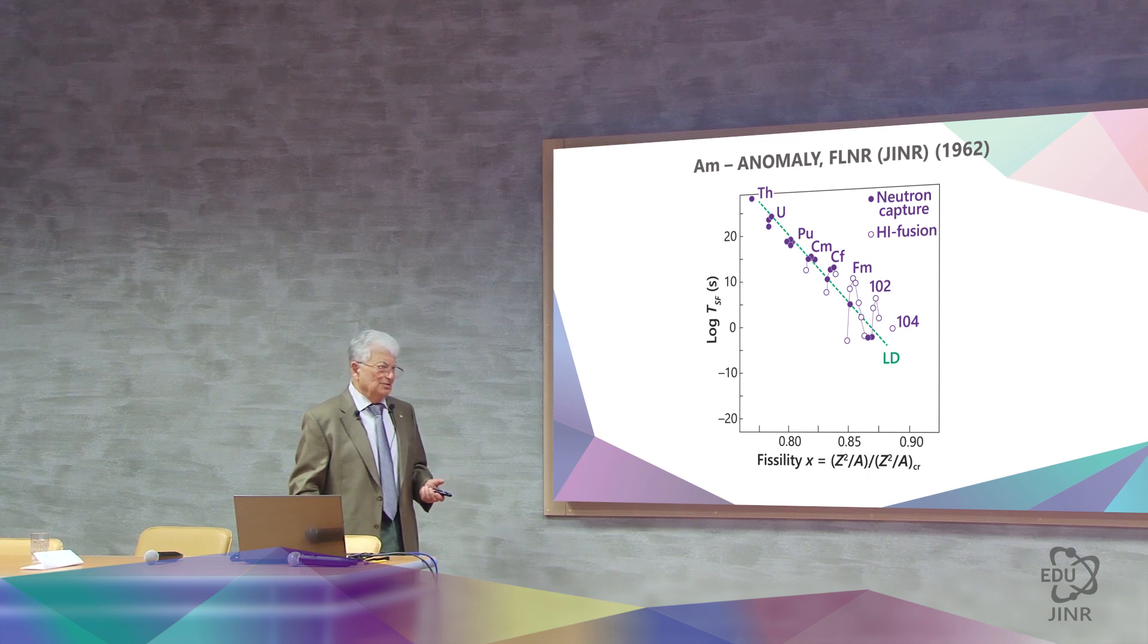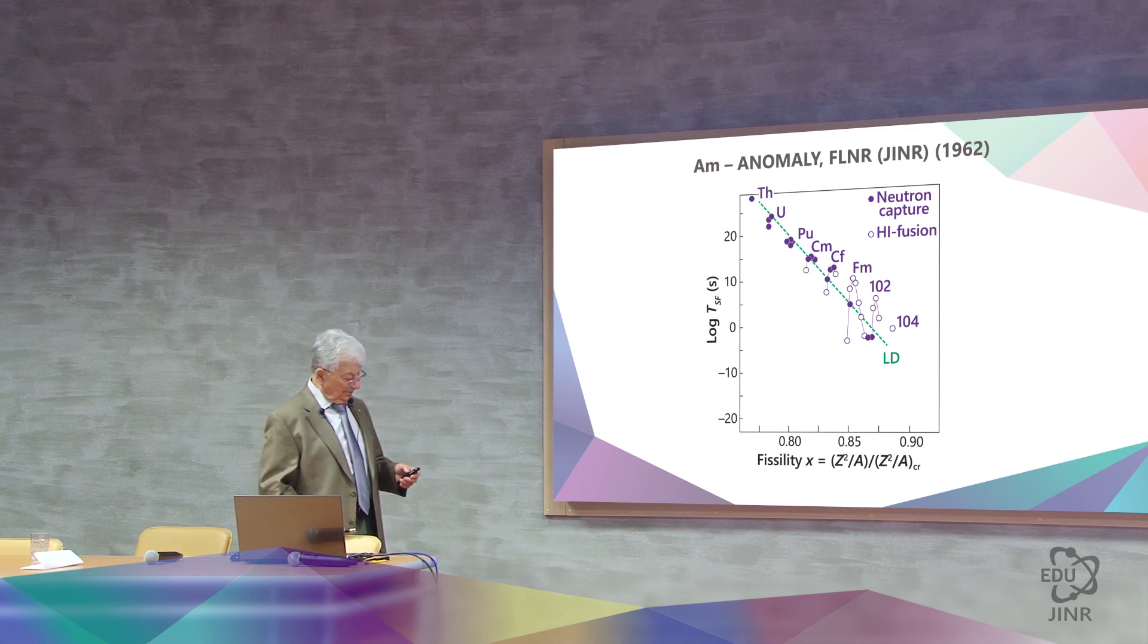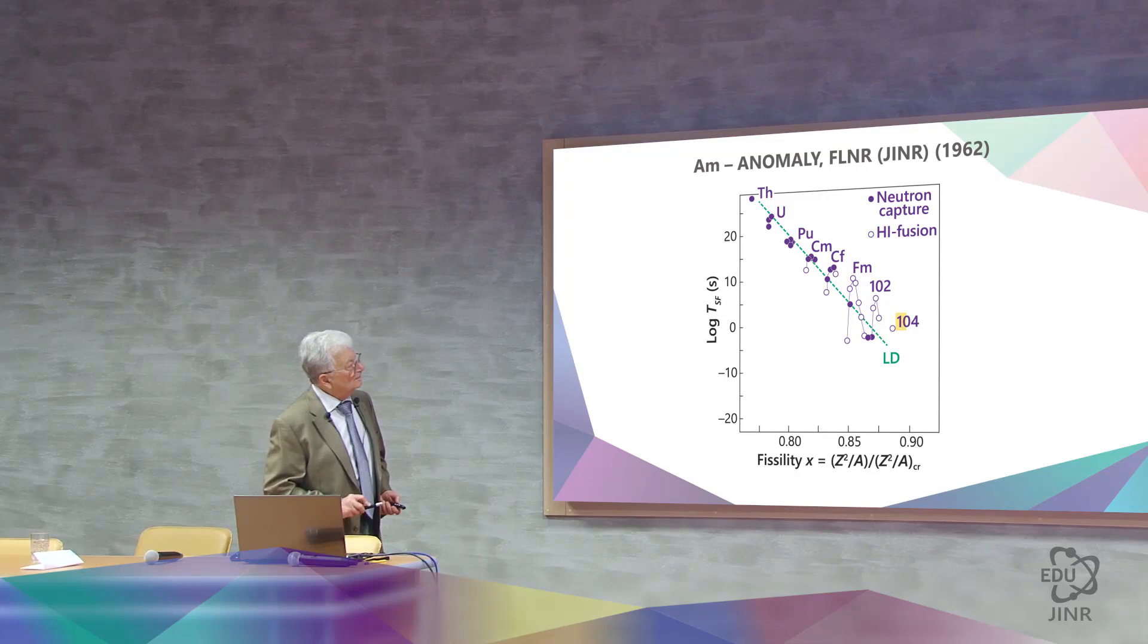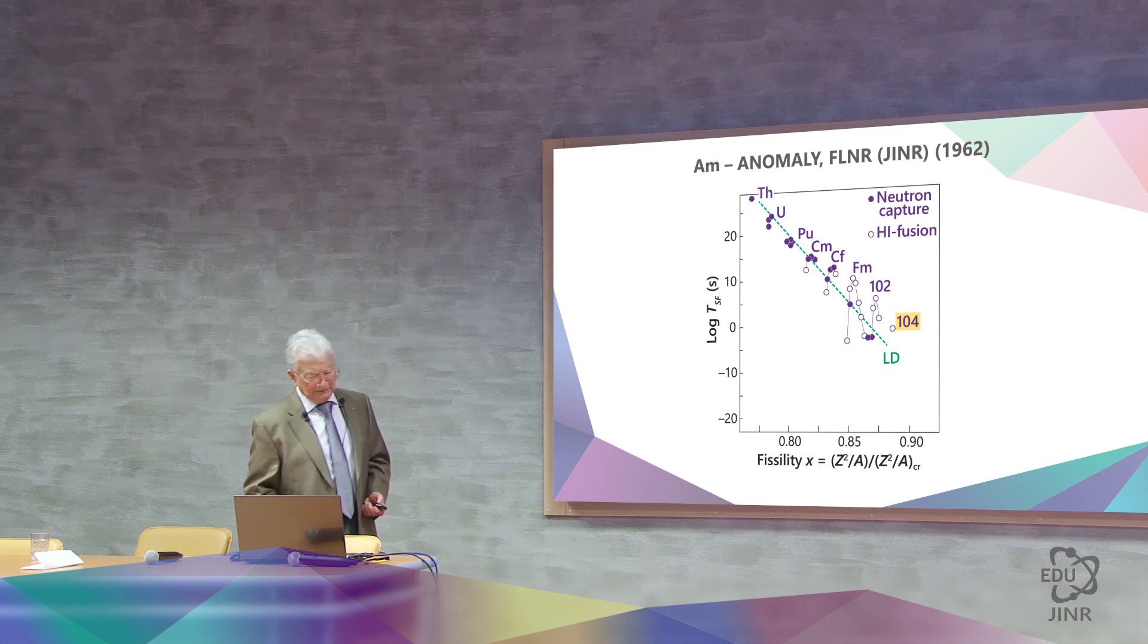But nevertheless, it was necessary to do the experiment in order to verify the model. And this experiment was done in 1962, and was intended to end on the 104th element, where a short period of spontaneous fission was expected.